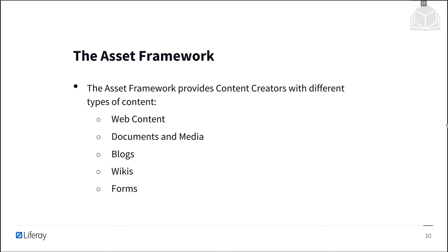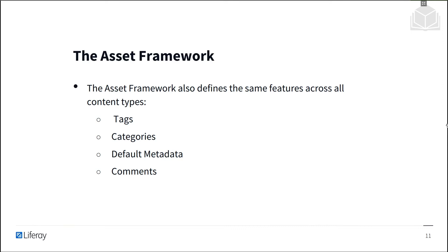Other common asset types include blog posts, wiki articles, forms, message board posts, knowledge-based articles, and so forth. Liferay's asset framework provides a set of features that can be used with any type of Liferay asset. These features include tags and categories, default metadata, and comments and ratings. Tags and categories are labels that can be applied to different kinds of assets to make searching for them easier or to facilitate custom processing of the assets.